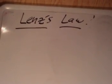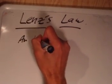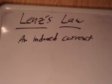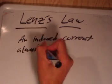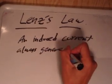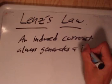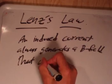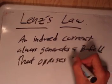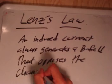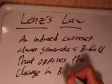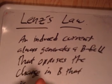The statement of Lenz's Law is something you should probably commit to your head and sort of work the logic out. It works like this: induced current always generates a B field that opposes the change in B that is happening.